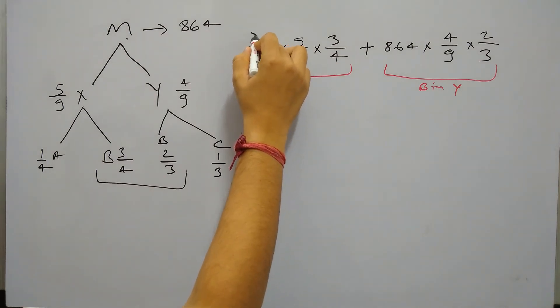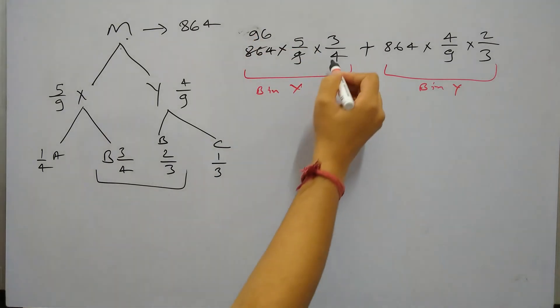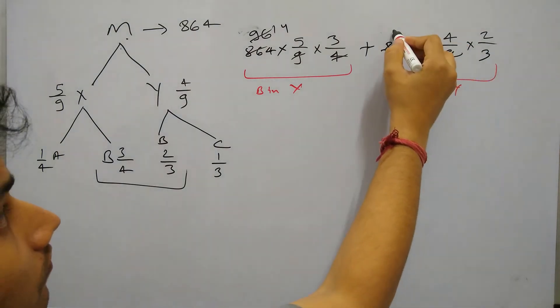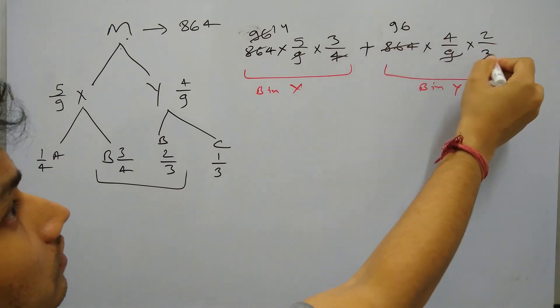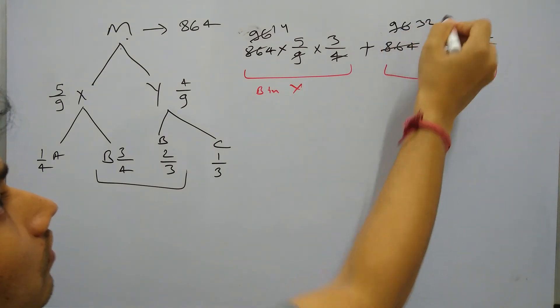So this is what we have written and this is B in X and this is B in Y. 9, it will be 80, it will be 96, and then 4, 14, 9, this will be 96 and 32.